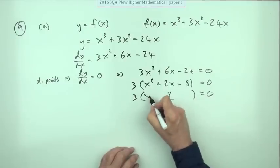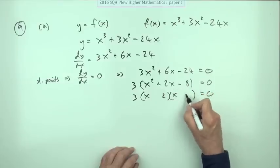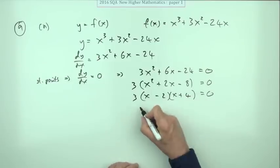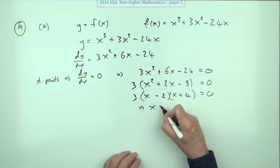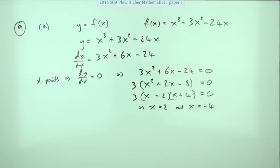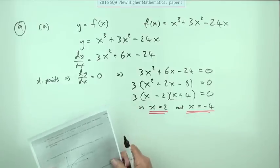So that would be factorized now. x times x, multiply to give 8 with a difference of 2, that's 2 and 4. The larger one has to be positive, so we've got that. So finally you've got the stationary points are going to be at x equals 2 and x equals negative 4. Now it did just say find the x coordinates, so I'm not going to bother finding the y coordinates.